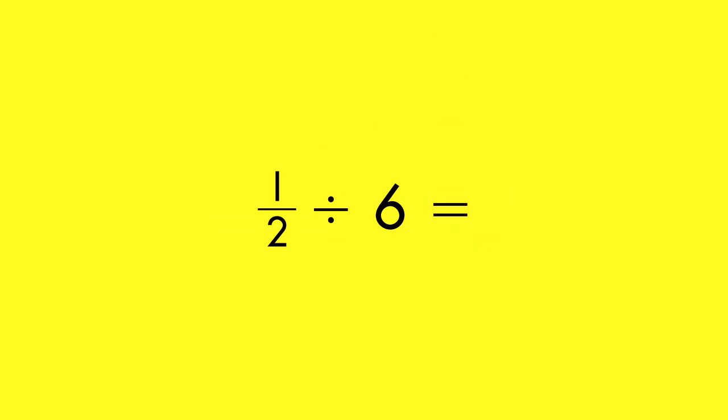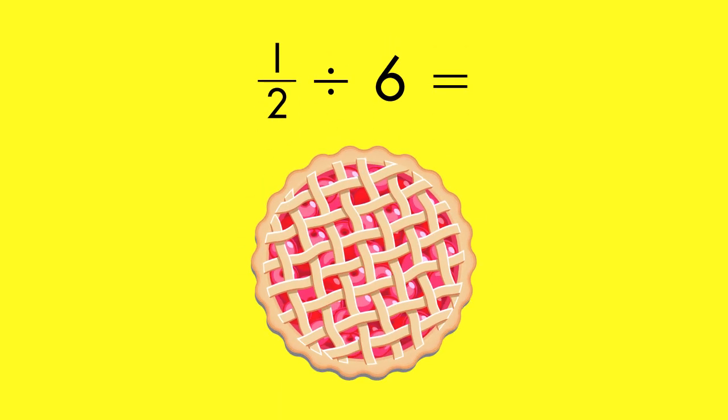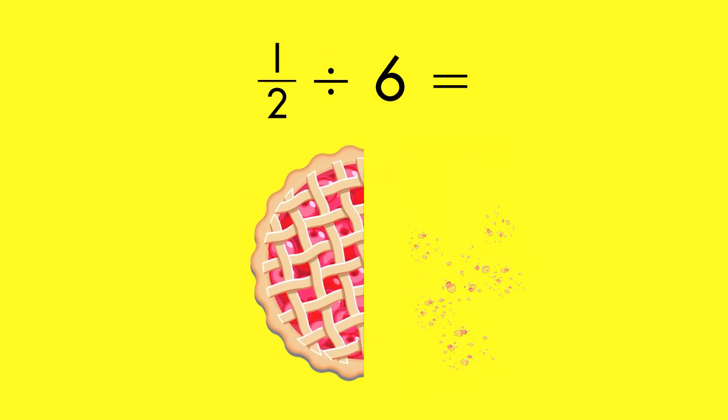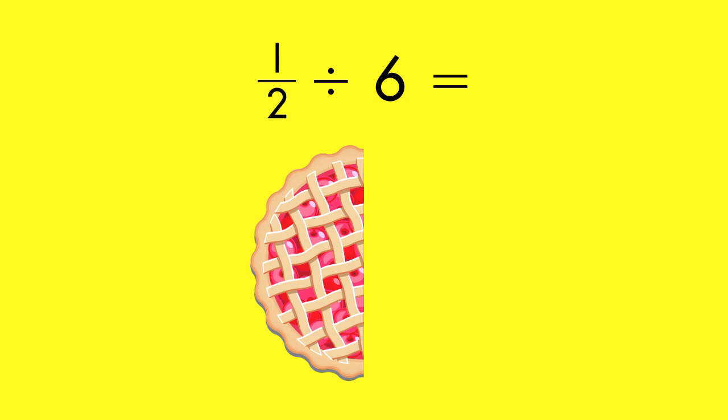To make this problem easier to visualize, imagine a half-eaten cherry pie. When we divide 1 half by 6, it's like asking how much of the whole pie each person will get if we divide half of the pie into 6 equal parts.